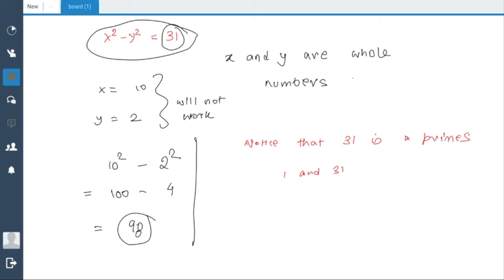So x² - y² can be factorized. So let's do that. x² - y² = 31. This implies (x + y)(x - y) = 31.